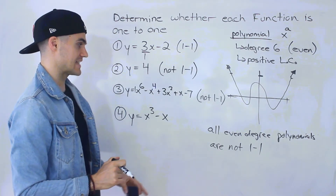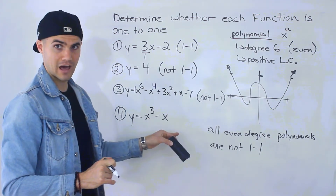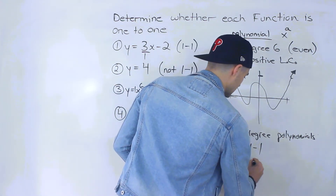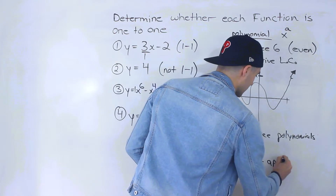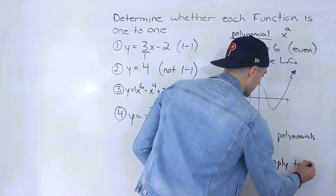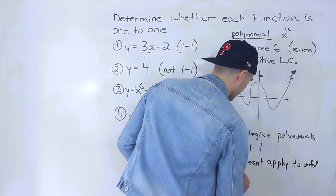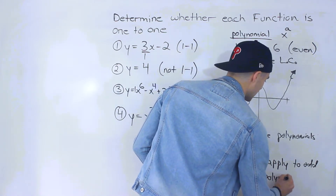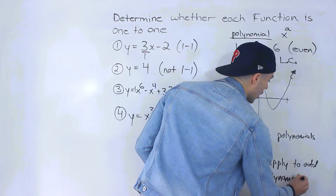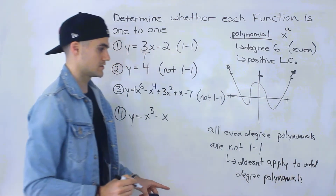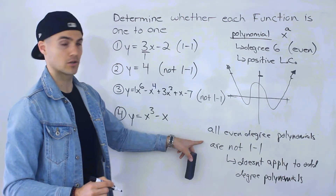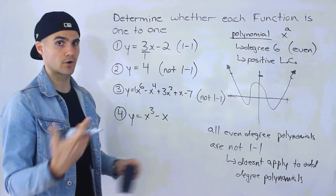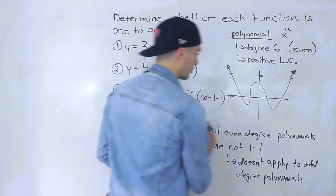One important thing to note: this does not apply to odd degree polynomials. Odd degree polynomials can be either one-to-one or not one-to-one. Only even degree polynomials are guaranteed to not be one-to-one. I'll show an example of both cases with number four.